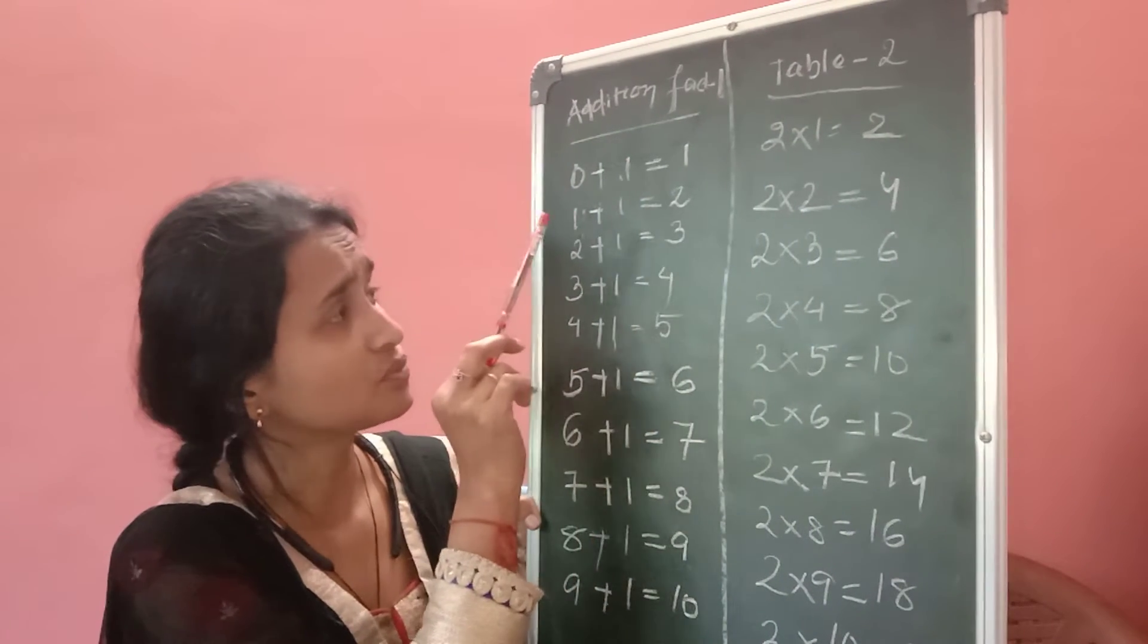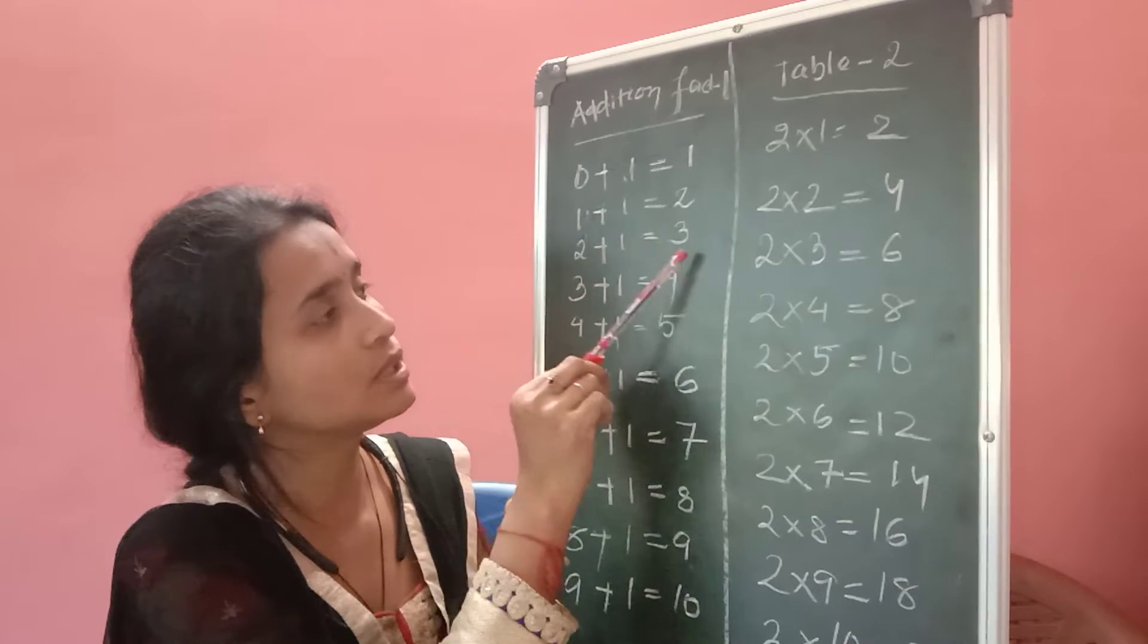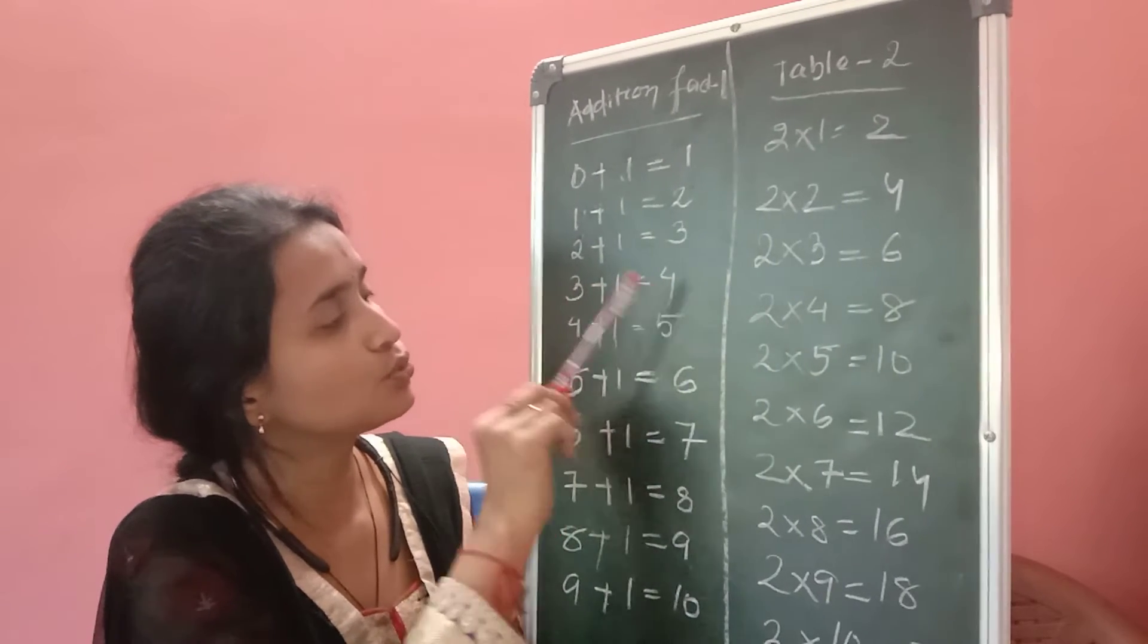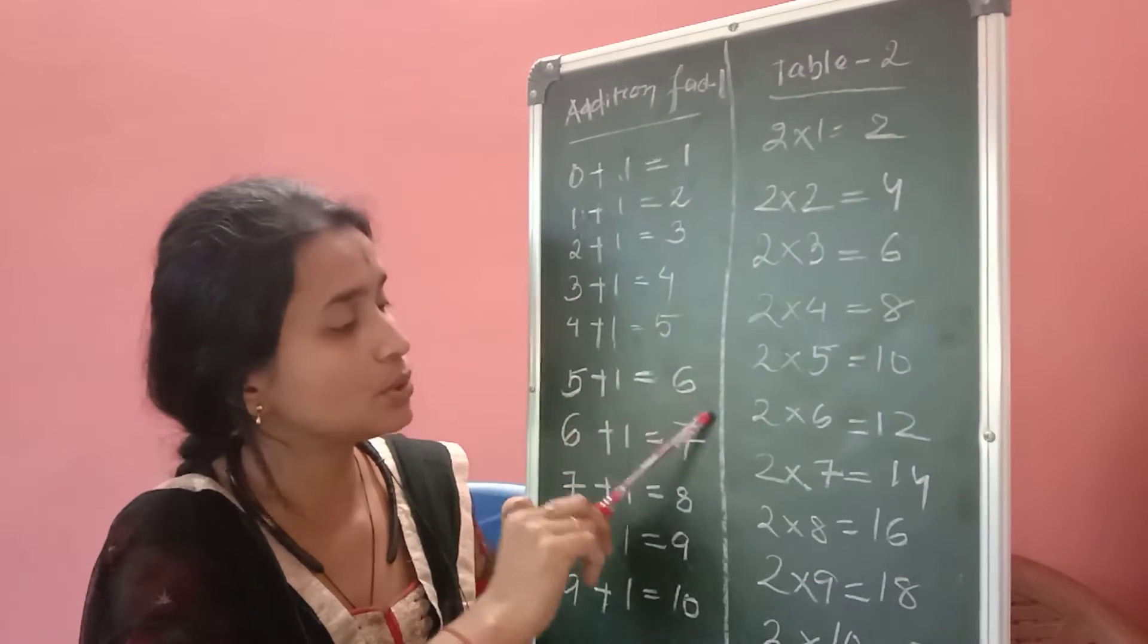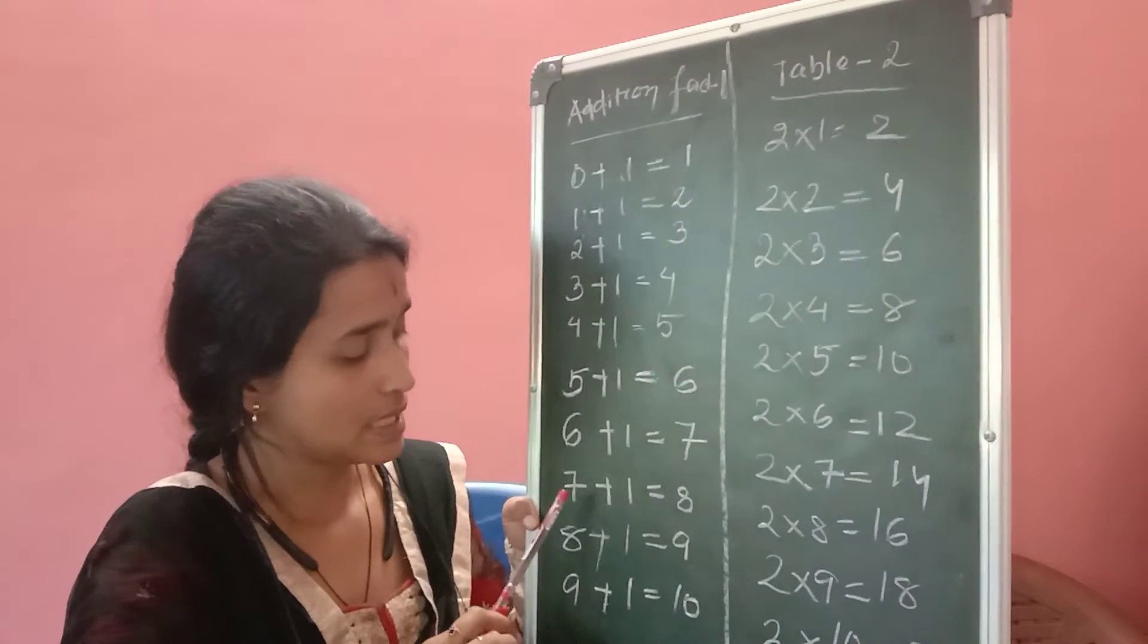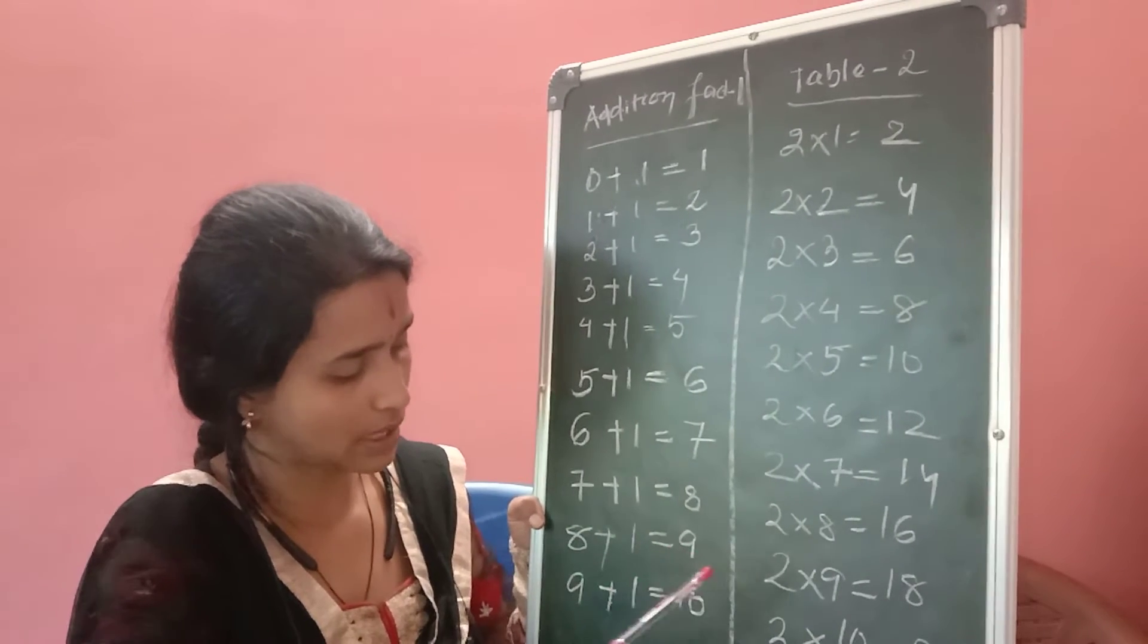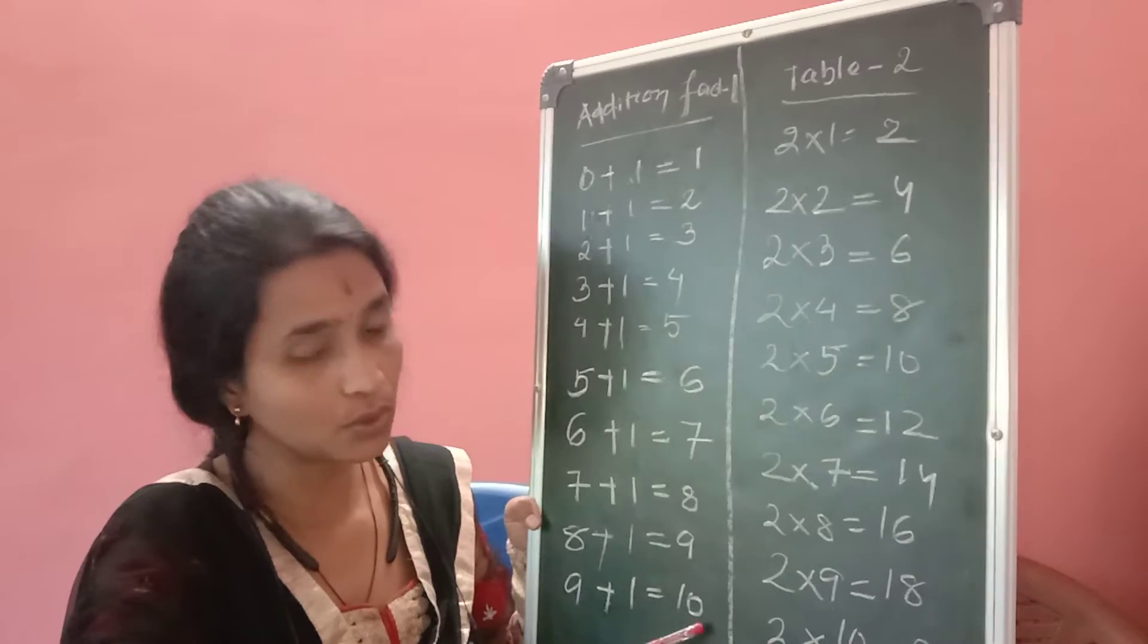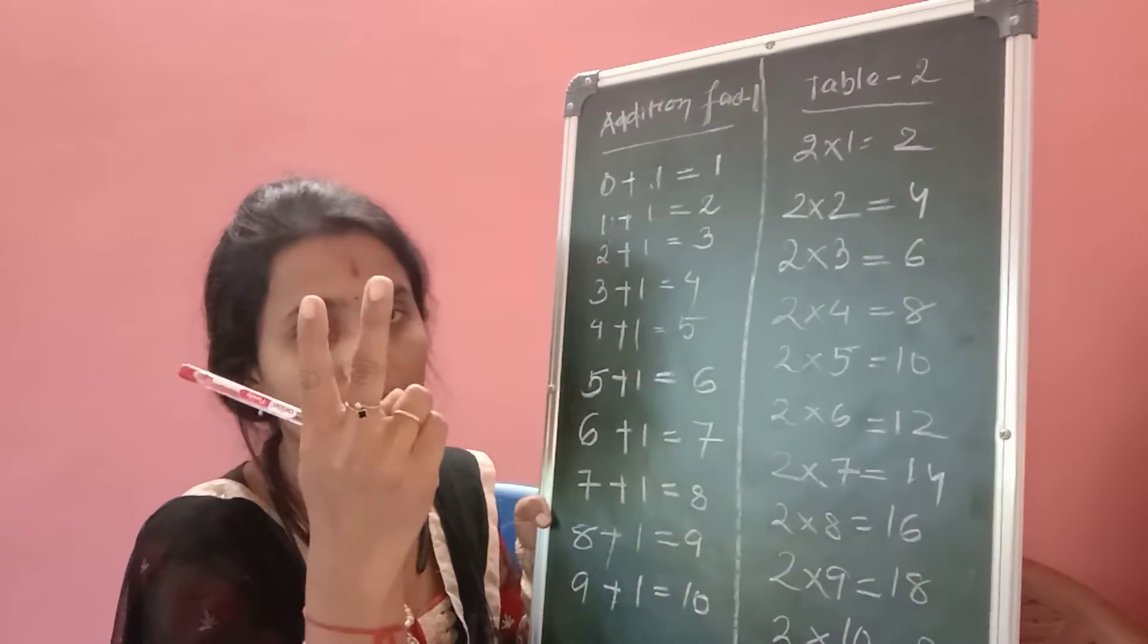So here if we add 1 to one number, then what happens? We read: 0+1=1, 1+1=2, 2+1=3, 3+1=4, 4+1=5, 5+1=6, 6+1=7, 7+1=8, 8+1=9, 9+1=10.